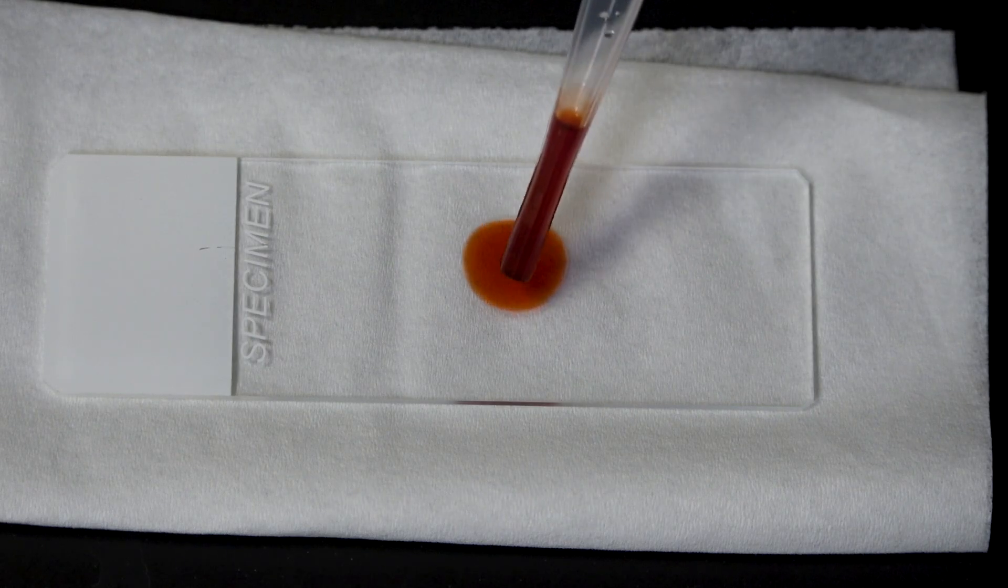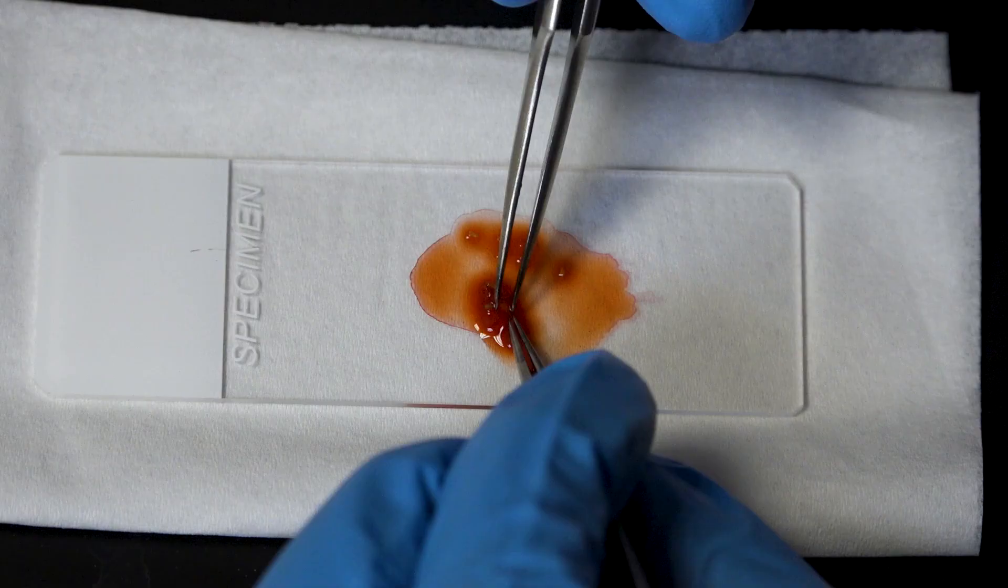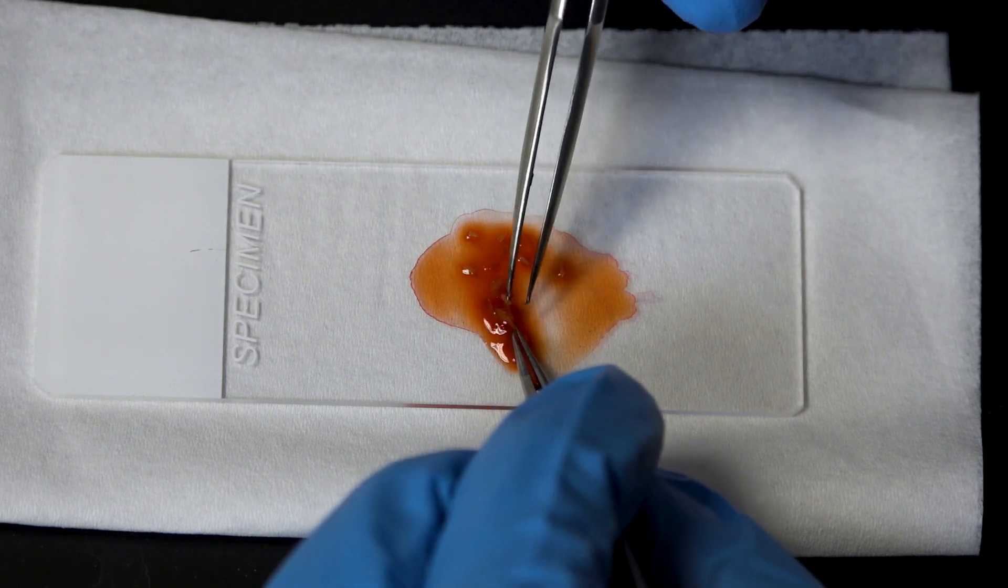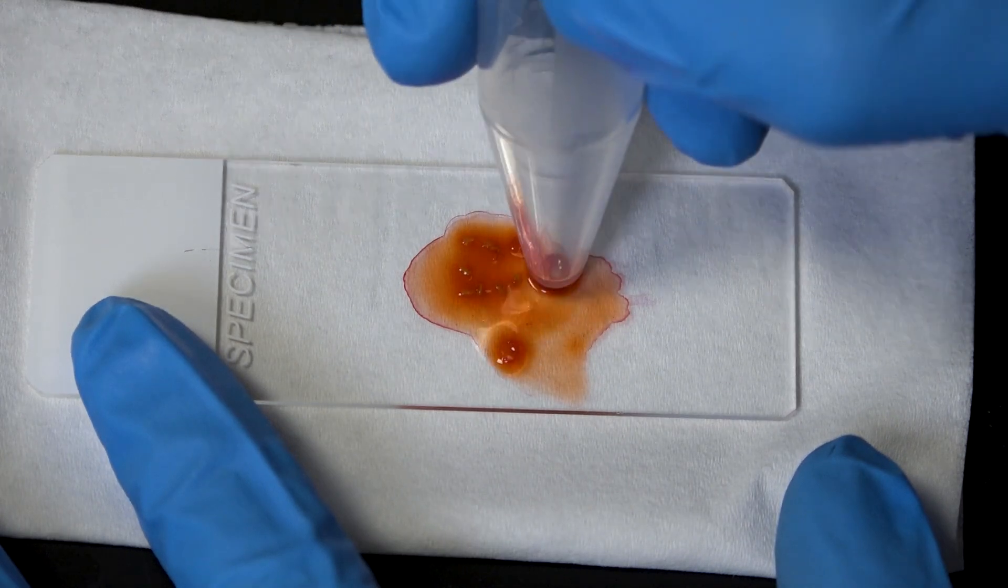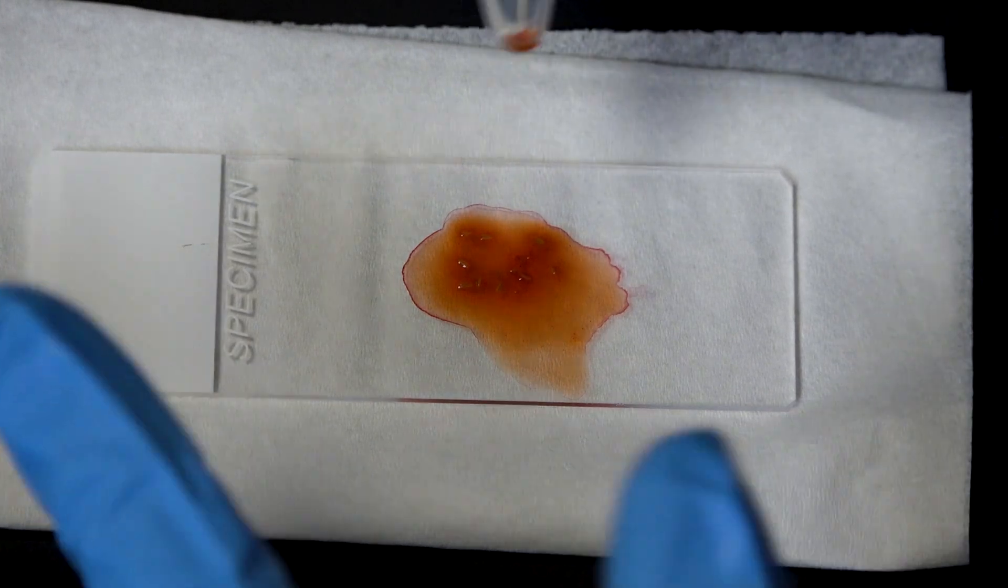So next I'm going to put a drop of acetocarmine stain on a slide, put a flower bud in that, and dissect out the anthers. The acetocarmine will stain the cell's chromatin red. Next I'll take the bottom of this test tube and gently squish the anthers a couple of times so the meiotic cells inside pop out onto the slide.